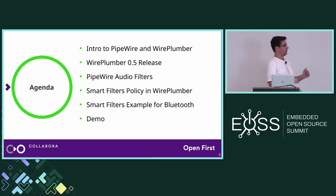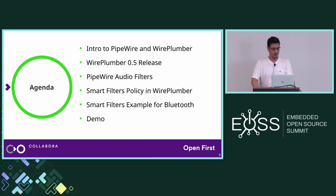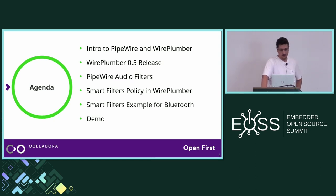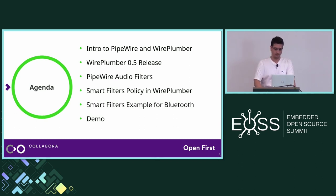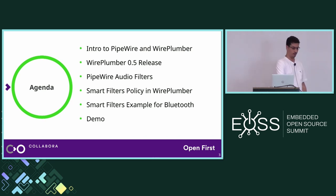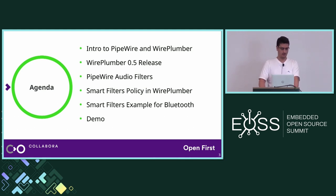After that I'm going to focus on PipeWire audio filters — what they are, how they are represented by PipeWire, and how this new version of WirePlumber can handle them automatically thanks to the smart filters policy. Finally, in the last section I'll show an example of how we use this smart filters policy to solve a problem we face at Collabora when it comes to automatically switching Bluetooth profiles depending on whether there's an application capturing audio or not. If I have time I'll do a small demonstration at the end.